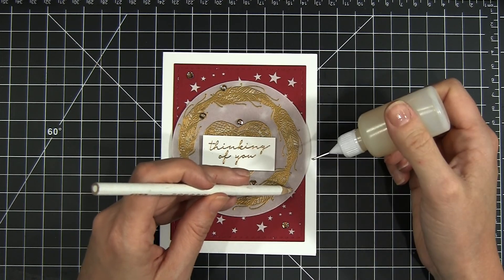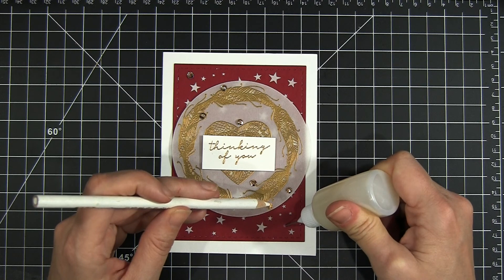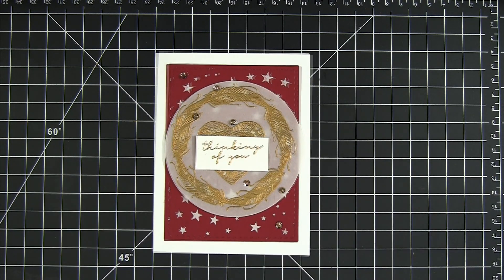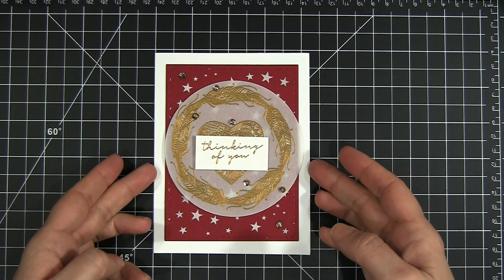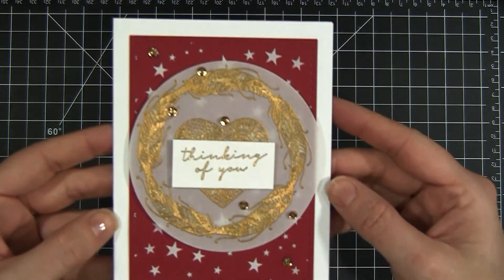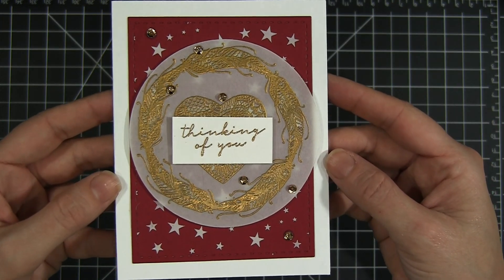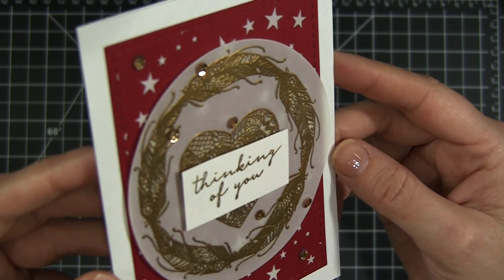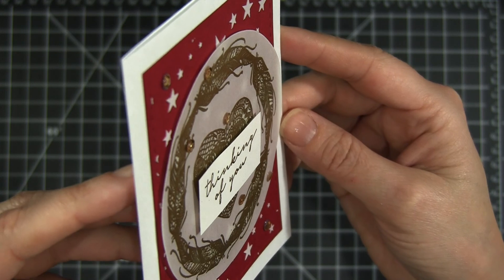To finish everything off and to bring a little bit of gold into that background, I'm adding a few gold sequins using glossy accents and my rhinestone pencil to place the sequins. Here is the finished card with that fun textured star background and the pop of gold from the stamped images and sequins.